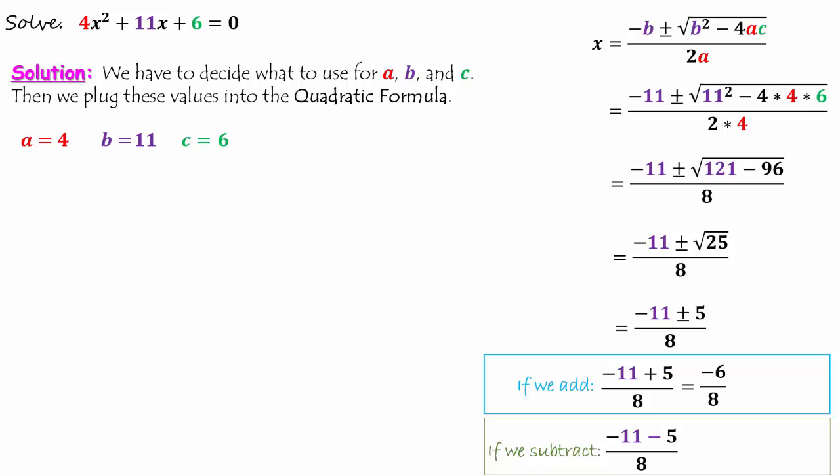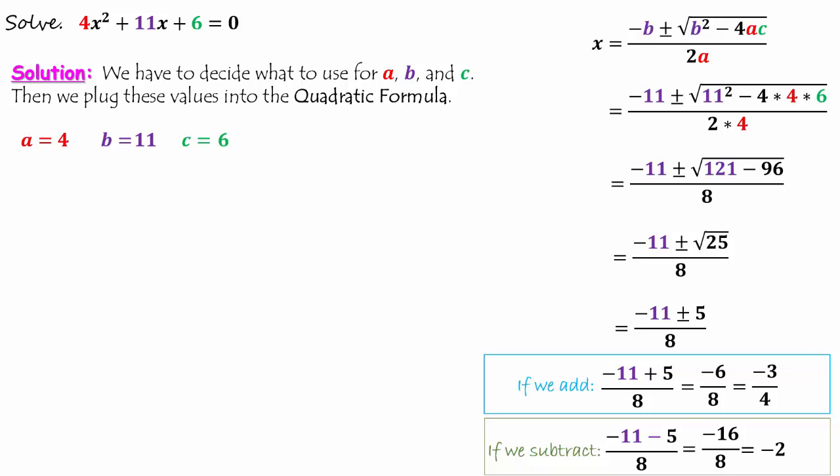If we add negative 11 plus 5, we get negative 6. Then negative 6 over 8 simplifies to negative 3 over 4. If we subtract, we have negative 11 minus 5, which is negative 16. Then negative 16 over 8 is negative 2. These are the two solutions and our final answer.